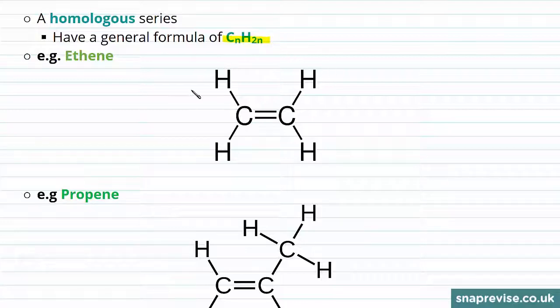Here we have a molecule of ethene and we can see that double carbon to carbon bond there. Ethene contains two carbon atoms, meaning that n will be equal to two. So we can calculate the number of hydrogen atoms that we'd expect in a molecule of ethene. That's two times two, giving us four hydrogen atoms, which we can indeed count here in our molecule, meaning the formula of ethene will be C2H4.